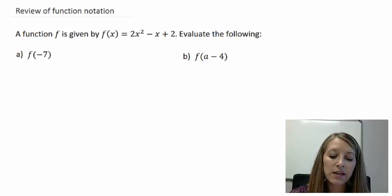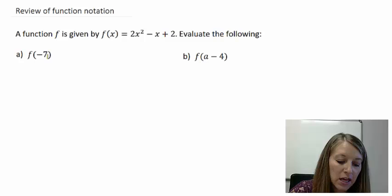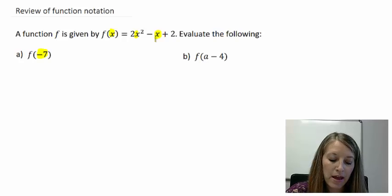If f of x is 2x squared minus x plus 2, and if we wanted to find f of negative 7, all we have to do is take this negative 7 and substitute it in for all of our x's in that function that we have there.